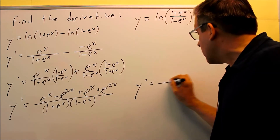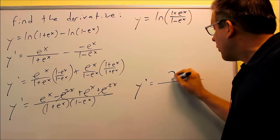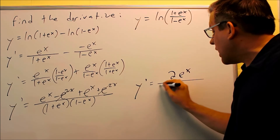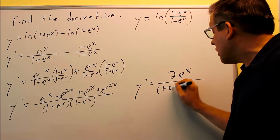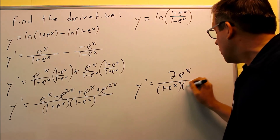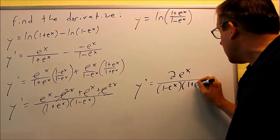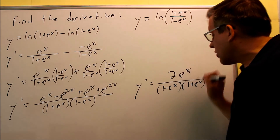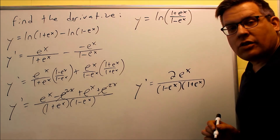So the final answer is 2eˣ over (1 − eˣ)(1 + eˣ), and we can just leave our answer in that form.